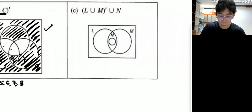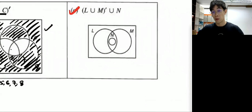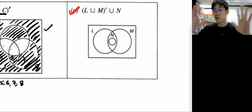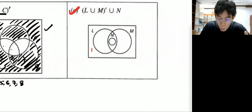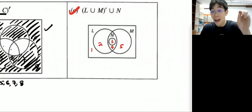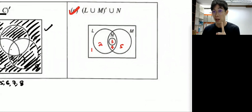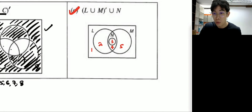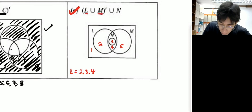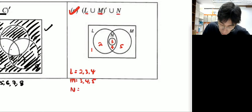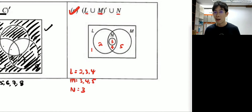I'll do one more with you — question C. I'm also going to post this as a YouTube video. Everyone put numbers in every small region. Now some students said they don't know this part, so I'll show you. L contains two, three, four. M contains three, four, five. N contains three only.